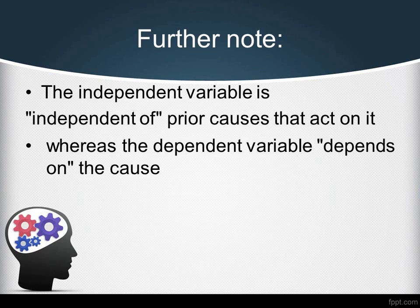Whereas the dependent variable depends on the cause. Don't worry if you still don't quite get it — we will see a few solved examples to make it more clear.